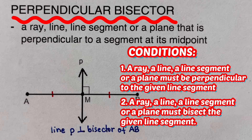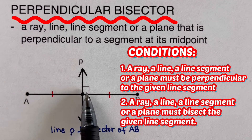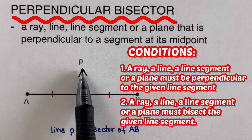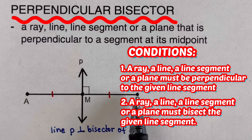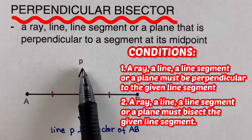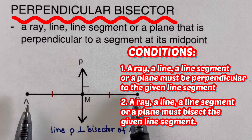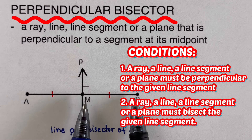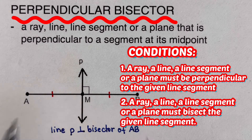The reason why line P is a Perpendicular Bisector to AB is because it is perpendicular — we can see that small square right there, telling us that line P forms a 90-degree angle with line segment AB. At the same time, line P is a bisector — it cuts AB into two equal pieces. So, line P is a Perpendicular Bisector of segment AB.